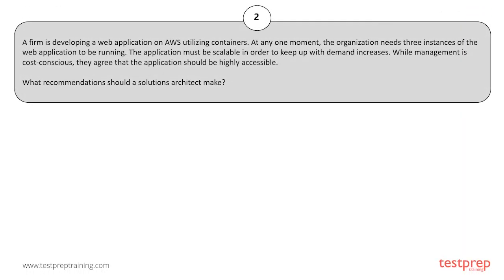Question number two: A firm is developing a web application on AWS utilizing containers. At any one moment, the organization needs three instances of the web application to be running. The application must be scalable in order to keep up with demand increases, and while management is cost-conscious, they agree that the application should be highly available. What recommendations should a solutions architect make?